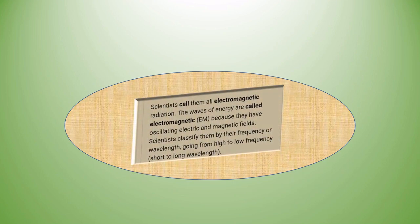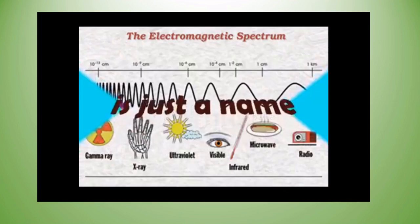Scientists call them all electromagnetic radiation. The waves of energy are called electromagnetic because they have oscillating electric and magnetic fields. Scientists classify them by frequency or wavelength, going from high to low frequency and short to long wavelength.